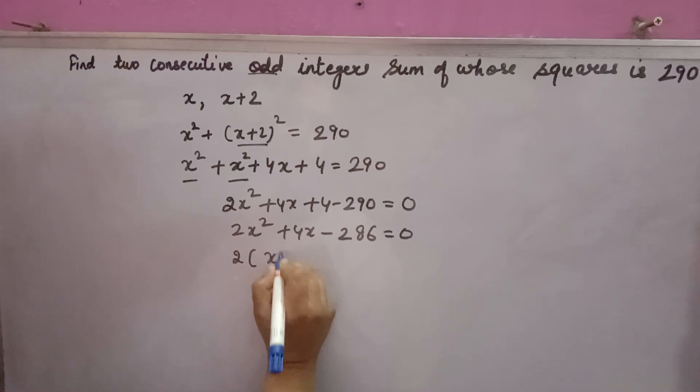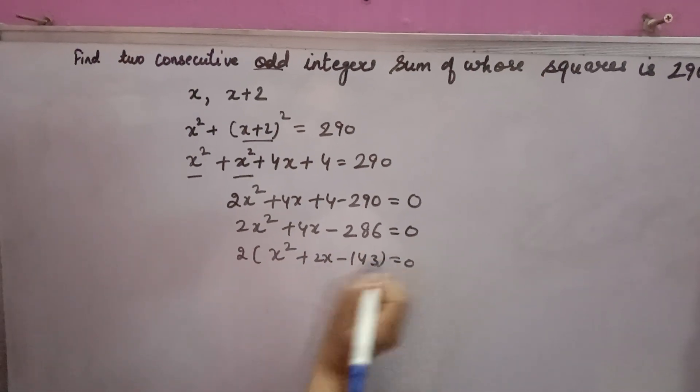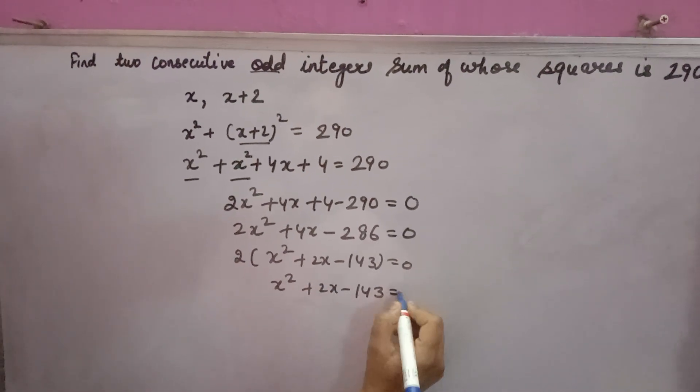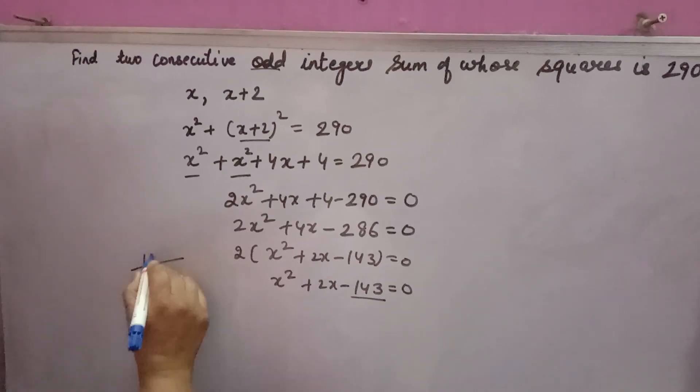Now factor out 2: x squared plus 2x minus 143 equals 0. Now splitting the middle term, find factors of 143. It is divisible by 11. 11 times 13 equals 143. These are its factors.